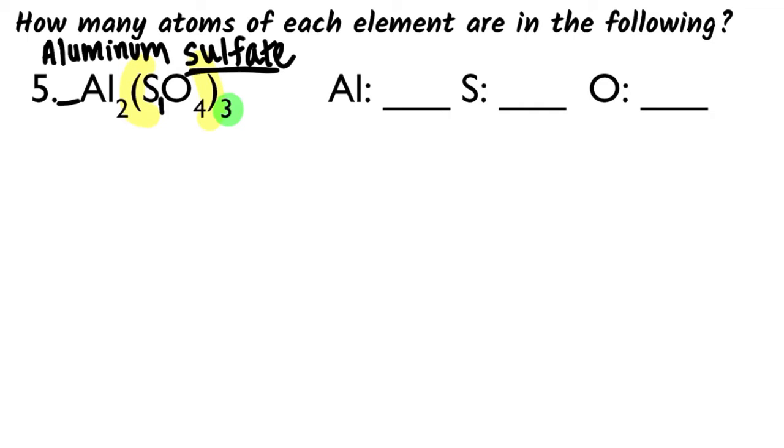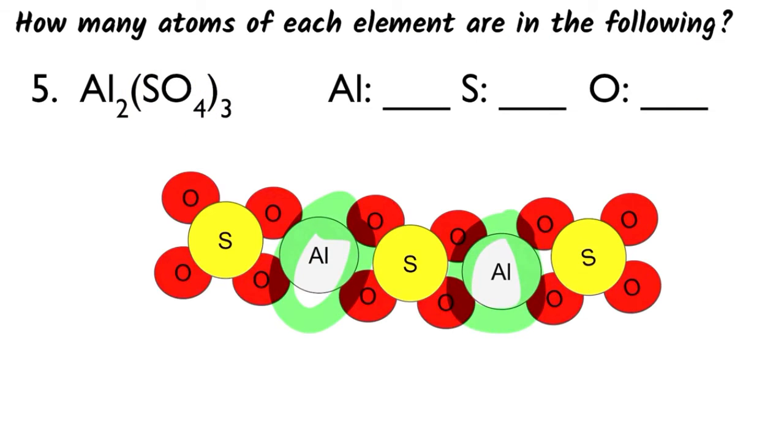And then this is where I need to be doing some work here. Remember how I distribute, if I have in math three times X plus one, I would distribute the three. The parentheses work the same way in chemistry. I'm going to distribute the three to the subscripts inside the parentheses—not aluminum, but sulfur and oxygen. So I'm going to end up with three sulfurs and twelve oxygens. Could have also figured this out by drawing, it just takes longer with this many atoms in the formula unit. So three times four for oxygen, three times one for sulfur and one times two for aluminum.